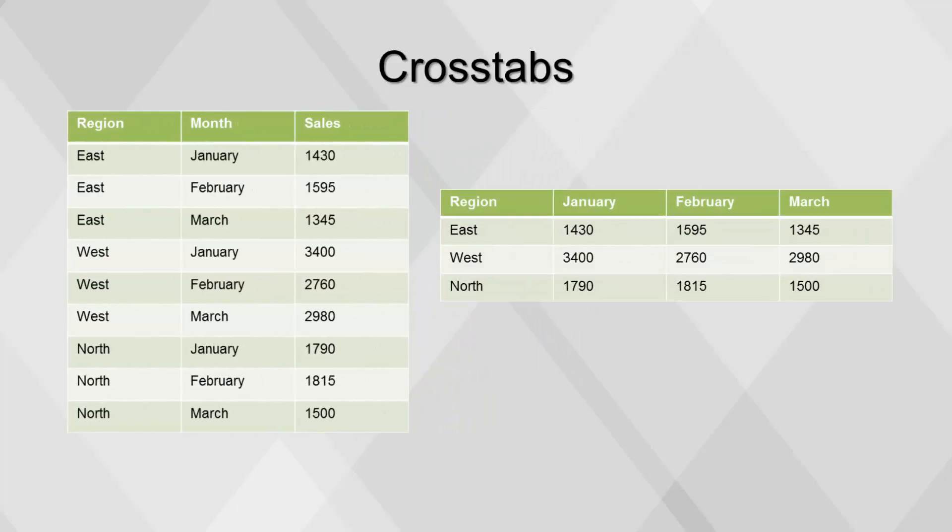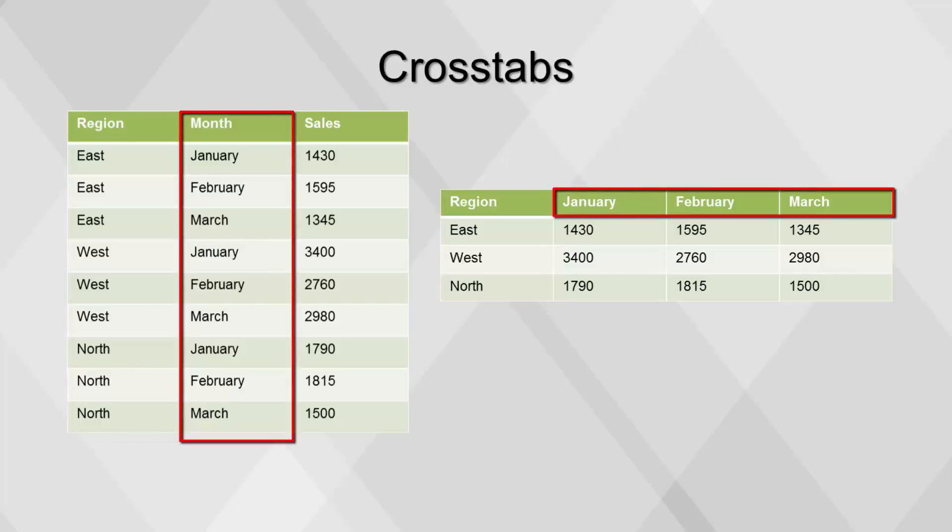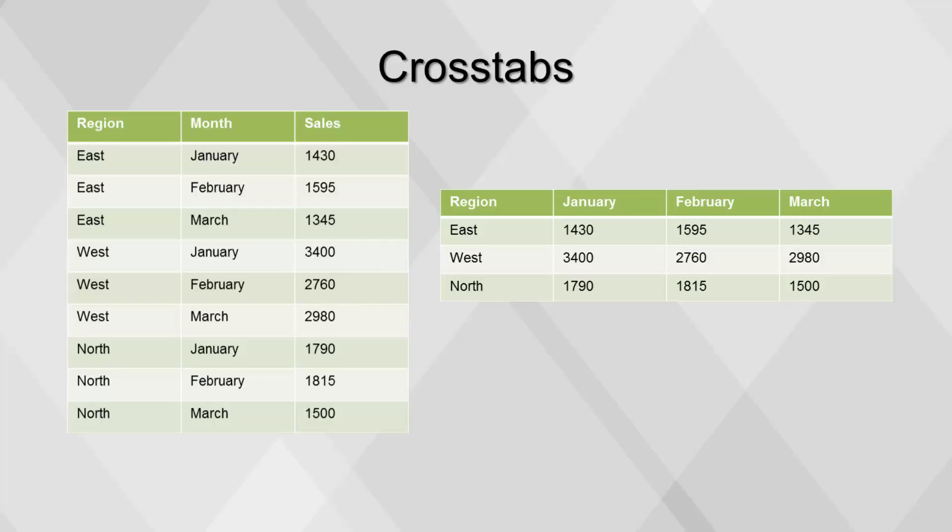A crosstab function is performed with region defined as the grouping field, month defined as the header field, and sales defined as the data field. There can be multiple grouping fields, but only one header field and one data field are allowed.